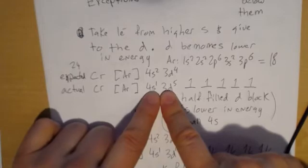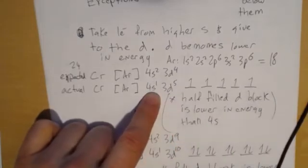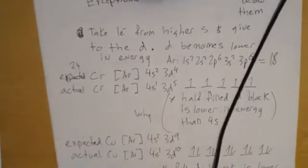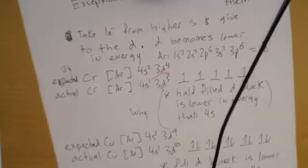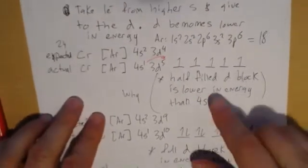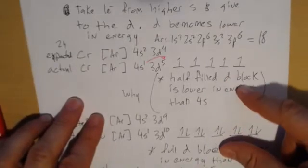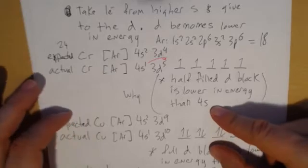So that perhaps was unexpected, but when we look at it and say it steals an electron from the S and gives it to the D, when it does that, it gets a half-filled D block and that lowers the energy of the D block, making it lower than the 4s. So that's the explanation.